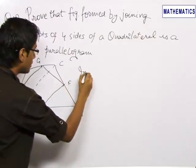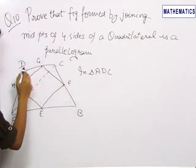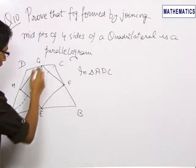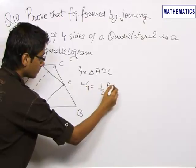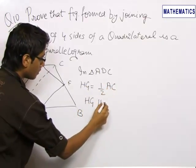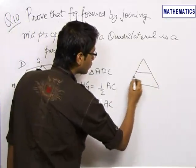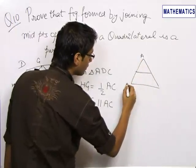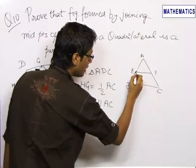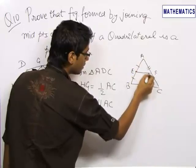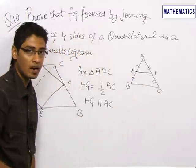Now, in triangle ADC, since H is the midpoint of AD and G is the midpoint of DC, so HG will be equal to half of AC, and HG will be parallel to AC. This is because we know that in a triangle, if we join the midpoints of two sides — say triangle ABC with E and F — where E is the midpoint of AB and F is the midpoint of AC, then the length EF equals half of BC and EF is parallel to BC.